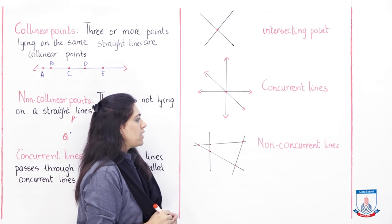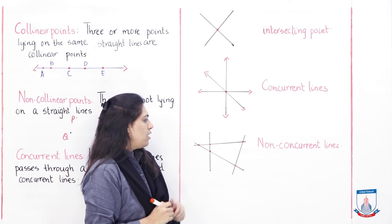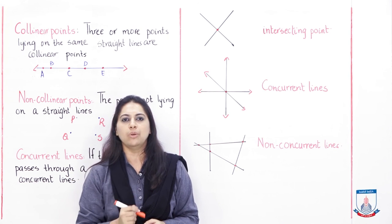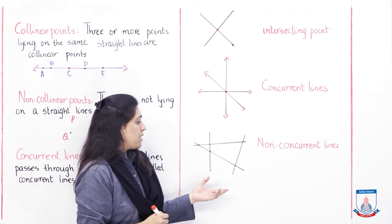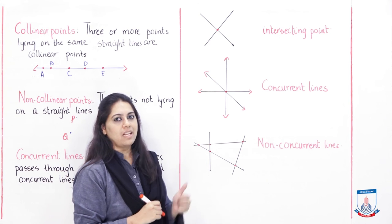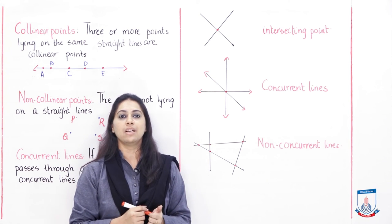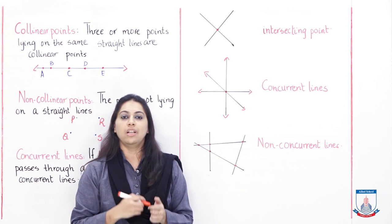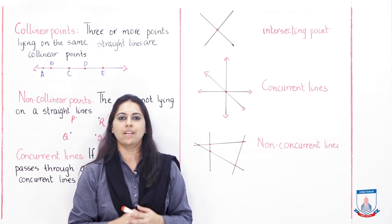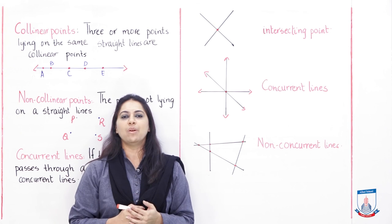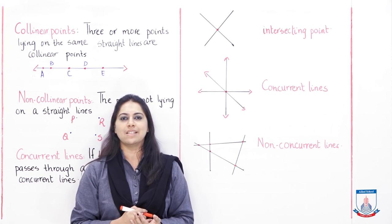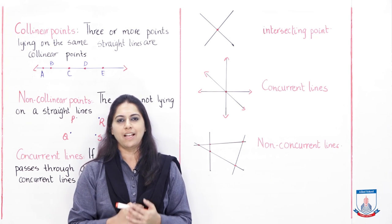Next are non-concurrent lines. These are lines that do not pass through the same point. As you can see in the image, there is more than one line, they are intersecting each other, but they are not concurrent - they do not have a fixed single point. So students, we are done with lines and shapes. I hope you enjoyed this lesson. Take care, Allah Hafiz.